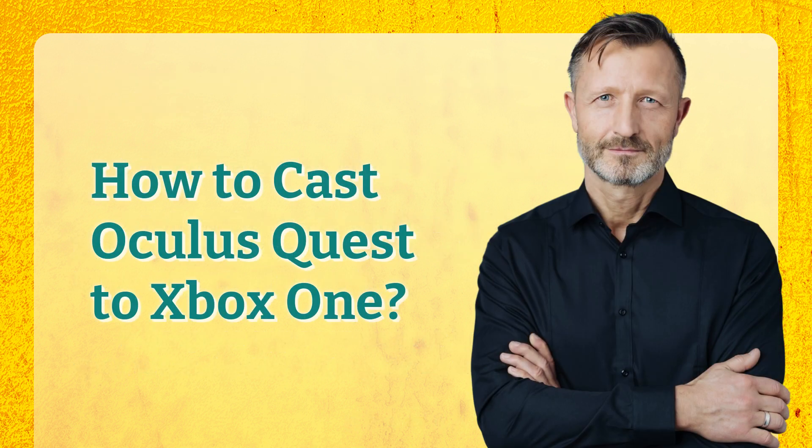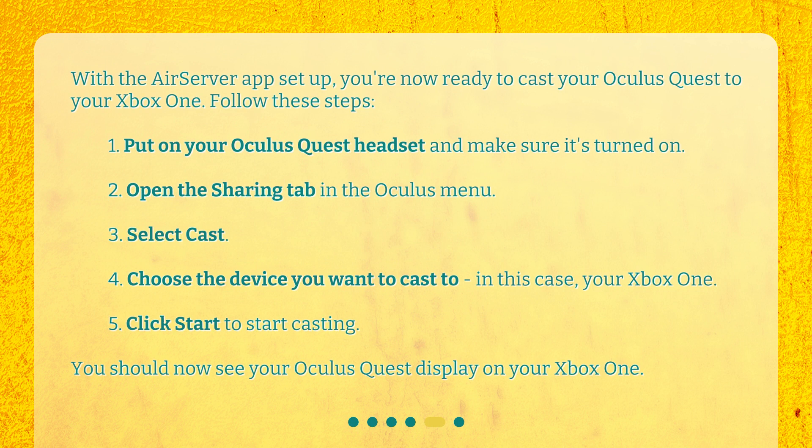How to cast Oculus Quest to Xbox One? With the AirServer app set up, you're now ready to cast your Oculus Quest to your Xbox One. Follow these steps: 1. Put on your Oculus Quest headset and make sure it's turned on. 2. Open the sharing tab in the Oculus menu. 3. Select Cast. 4. Choose the device you want to cast to — in this case, your Xbox One. 5. Click Start to start casting.